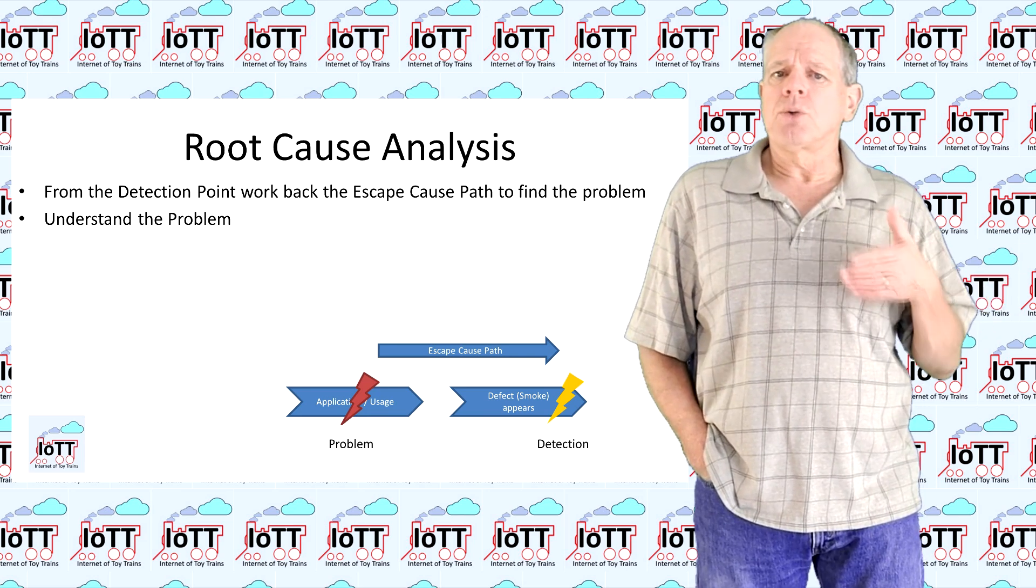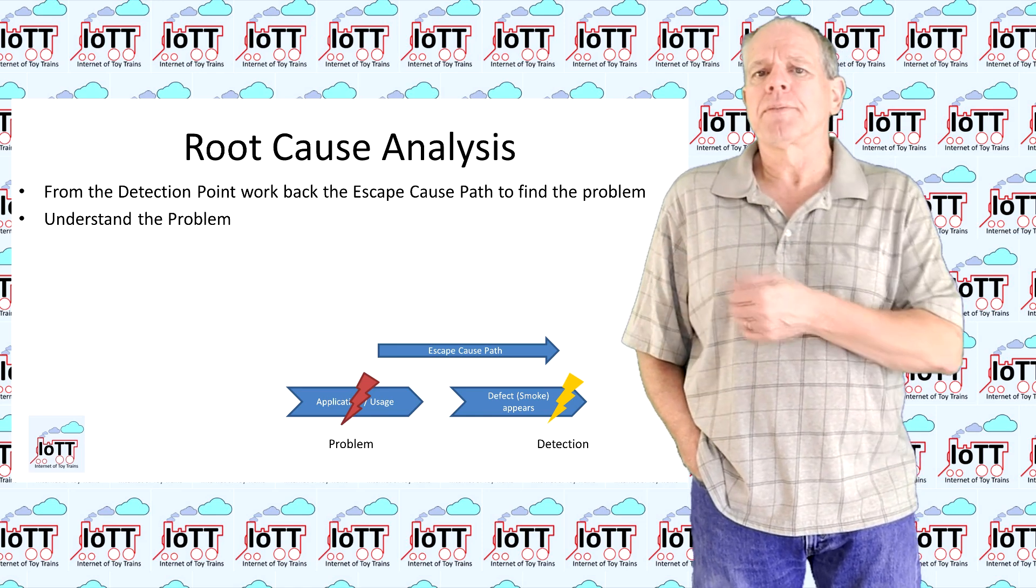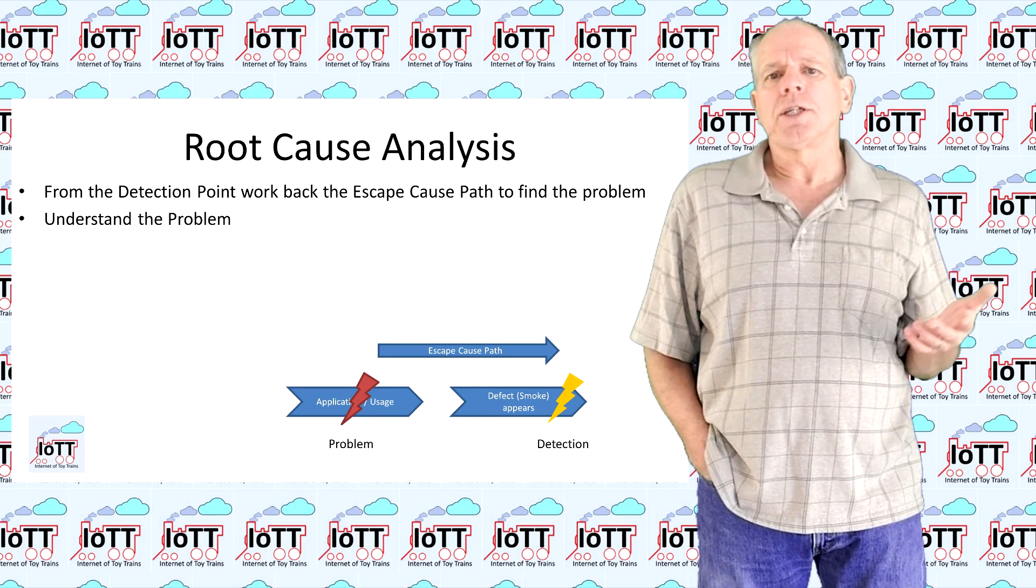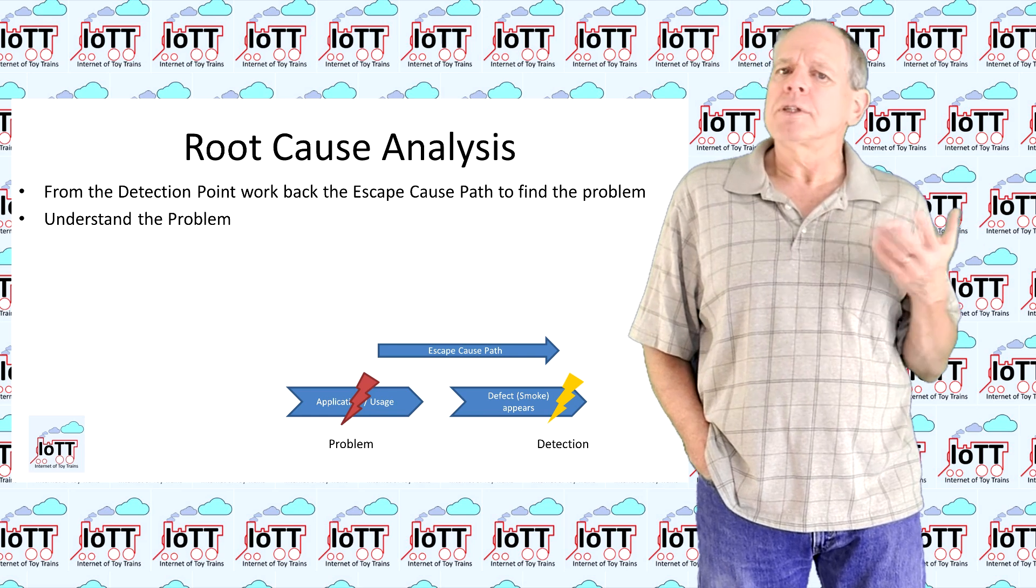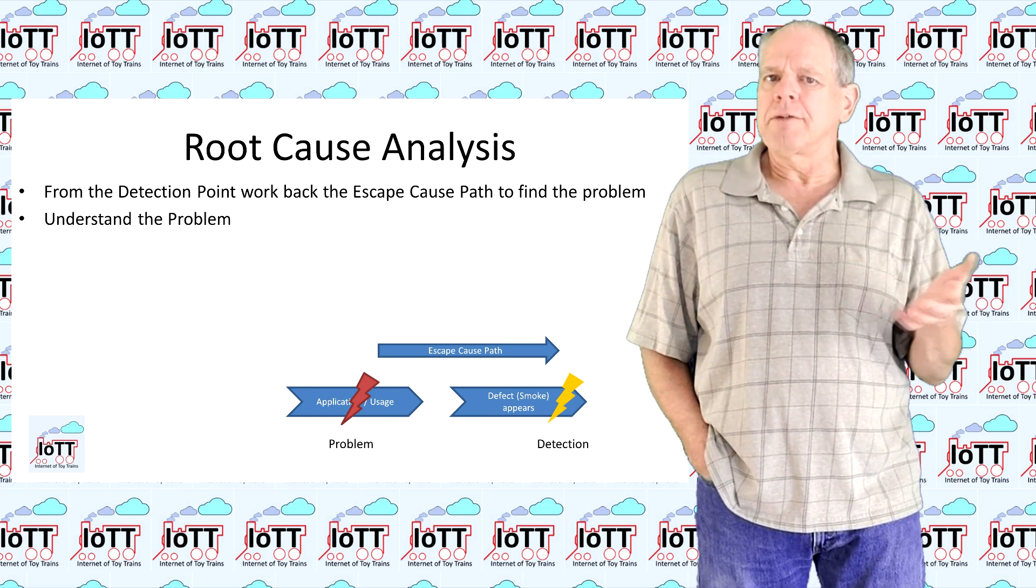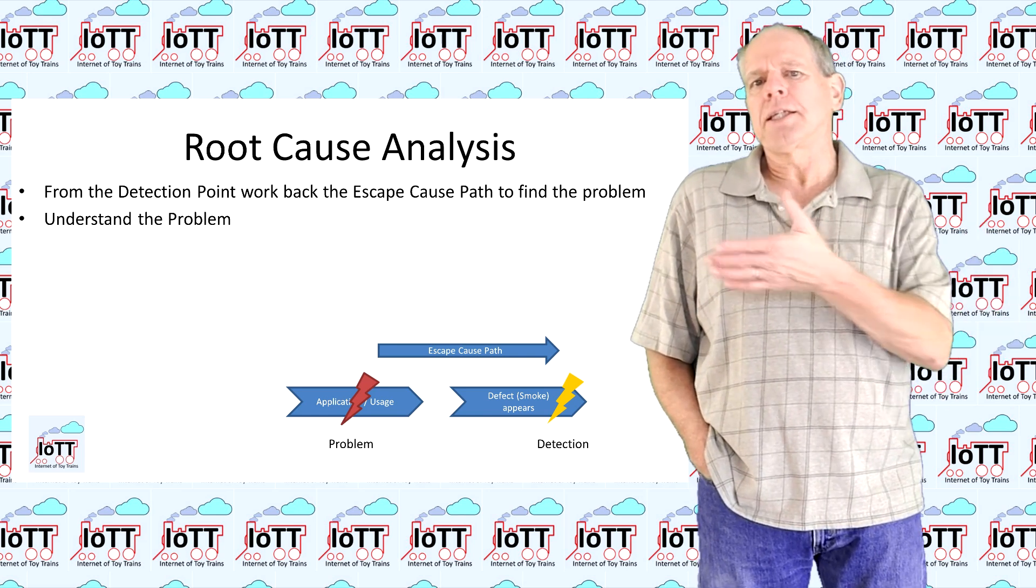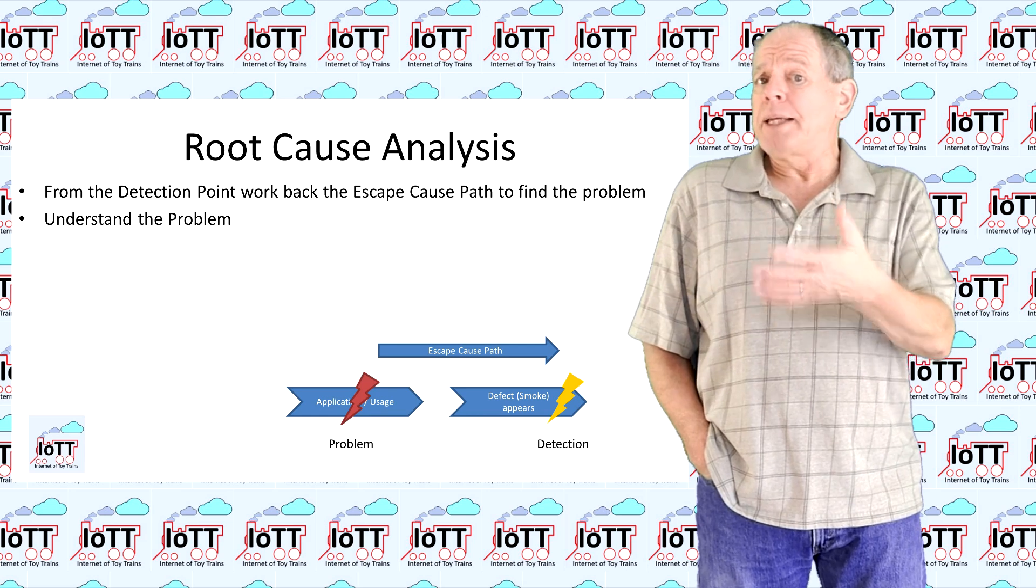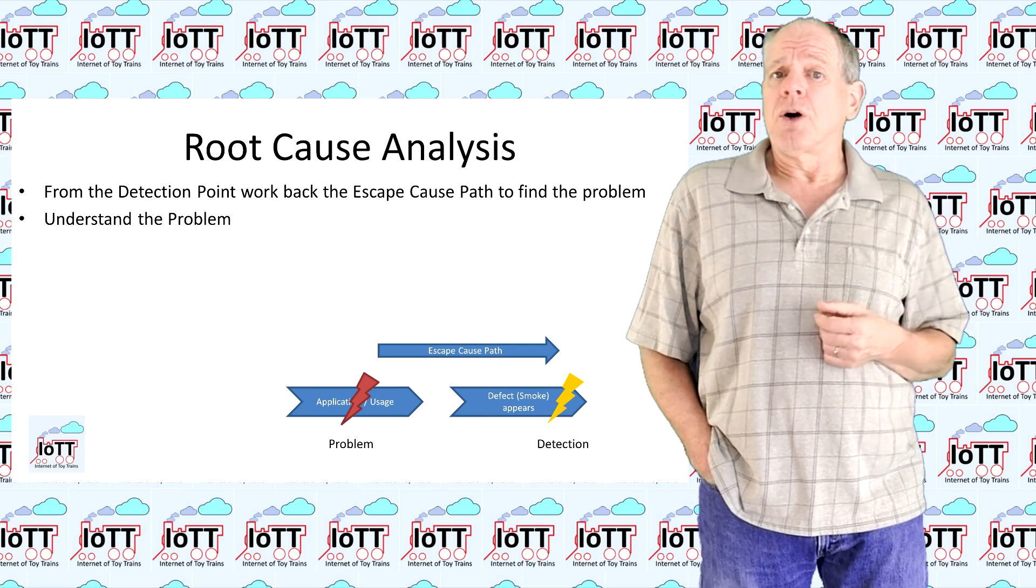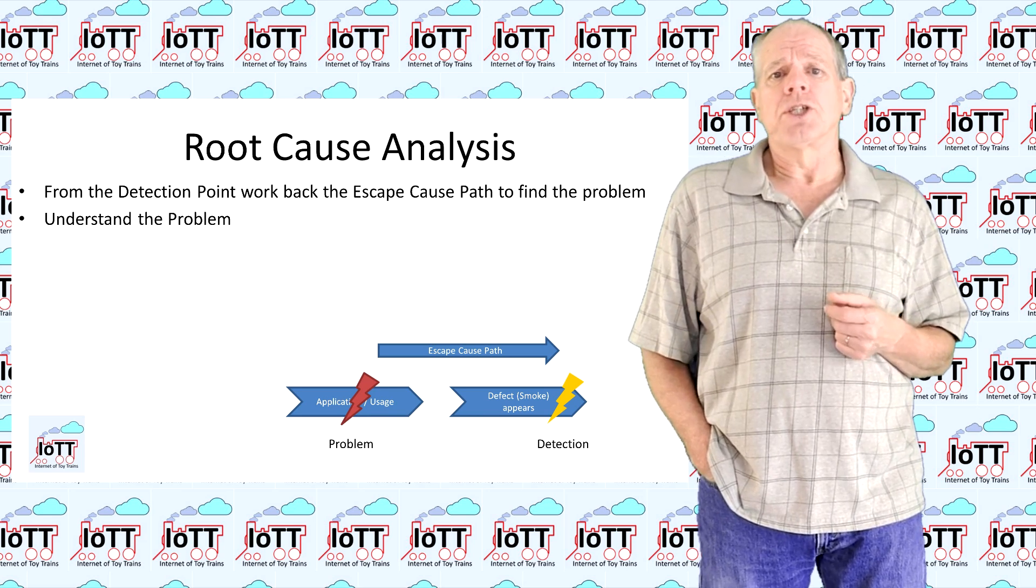So the first step is to identify what problem actually causes the symptoms. In the case of the aux shield, the symptom description was relatively clear. Everything worked fine when testing with 9V. Then, the voltage was increased to 16V and within a split second, after switching on, smoke was coming out of the Arduino on-board voltage regulator.